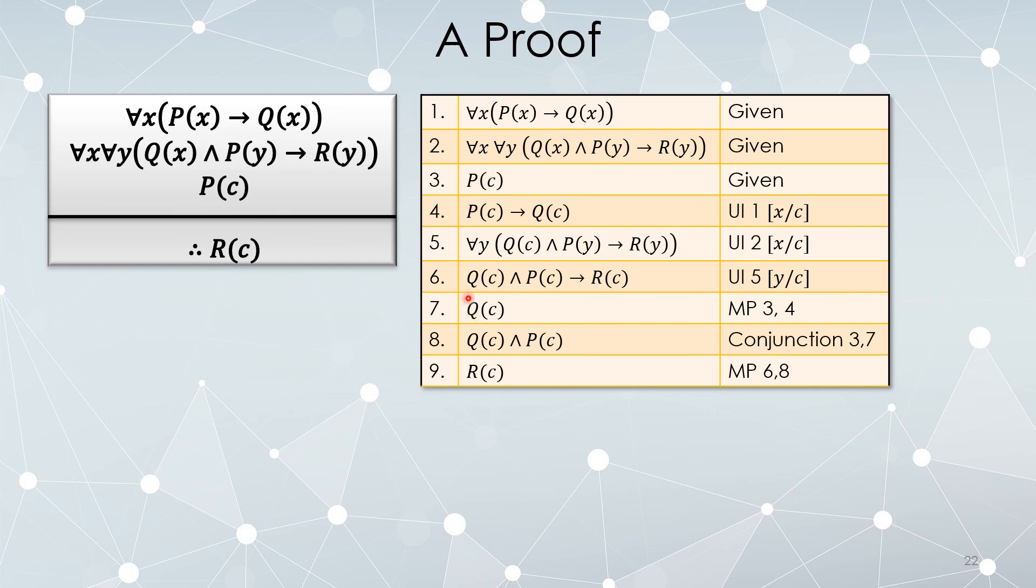We already had P(c) as a given, so I can conjoin them. This is just standard stuff from the previous unit. And now that completes the proof. Modus ponens between lines 6 and 8 gives me the desired conclusion.